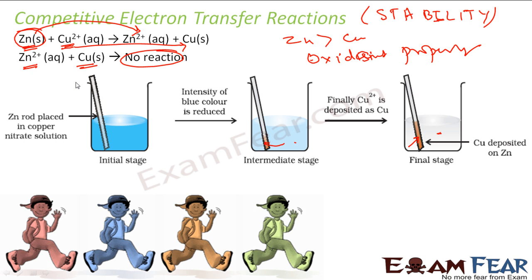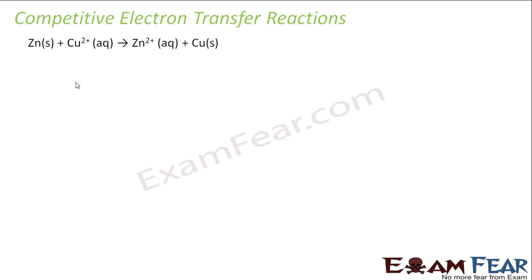Because in this case, zinc plus copper sulfate — the reaction happened. But copper plus zinc sulfate — the reaction didn't happen. Why? Because from the reactivity chart, we know that zinc is more reactive than copper, or zinc wants to lose electrons more than copper. So we can develop a metal activity series chart.